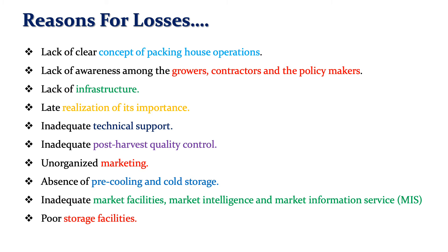The next reason is lack of realization of its importance — lack of education and human resources involved in post-harvest technology, R&D activities, training, economically viable fruits and vegetable processing units, and lack of extension activities all lead to post-harvest losses. Then inadequate technical support — lack of R&D activities, training, and human resources leads to post-harvest losses. Regarding refrigeration transportation facilities, to reduce the rate of respiration, distribution or transportation should be in refrigerated vehicles, but lack of refrigerated vehicles causes losses during transportation.